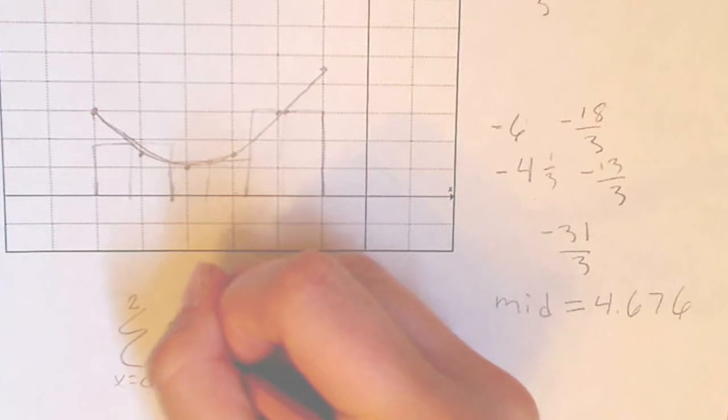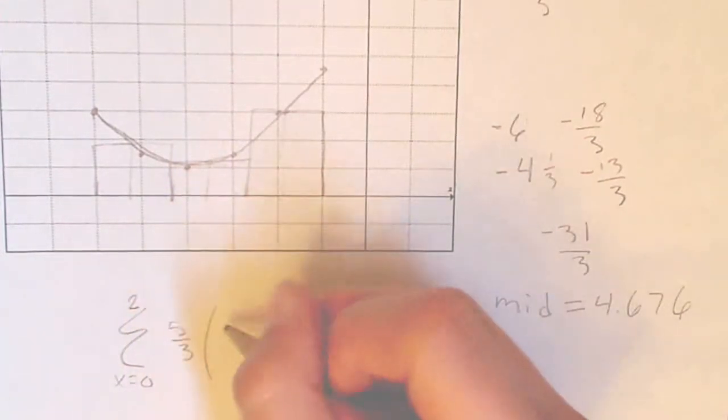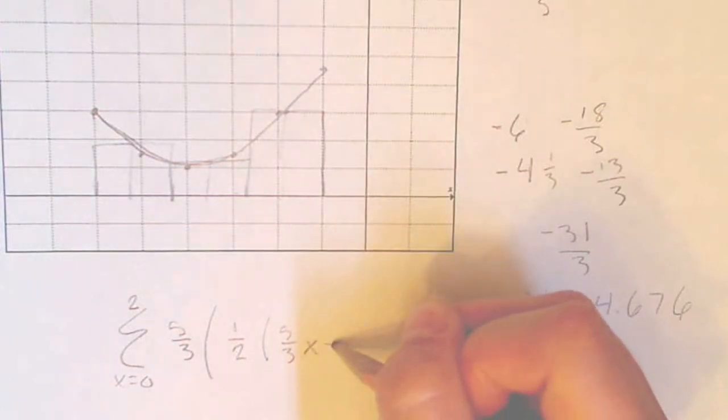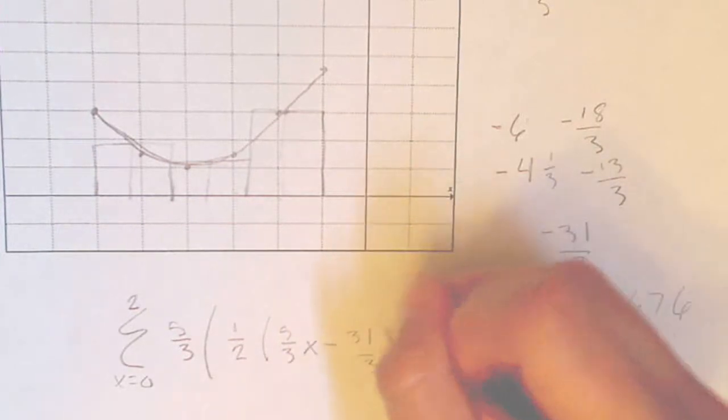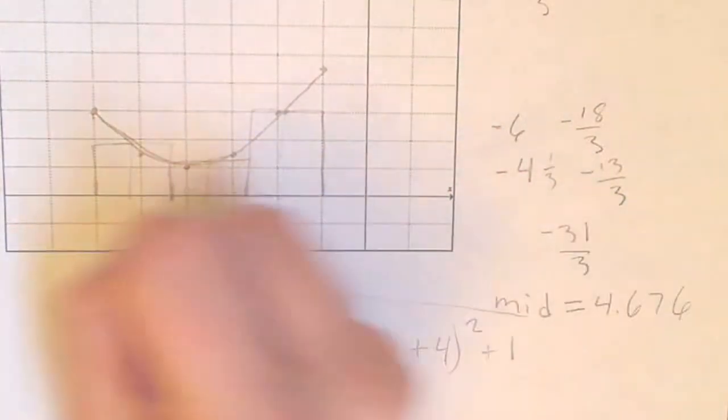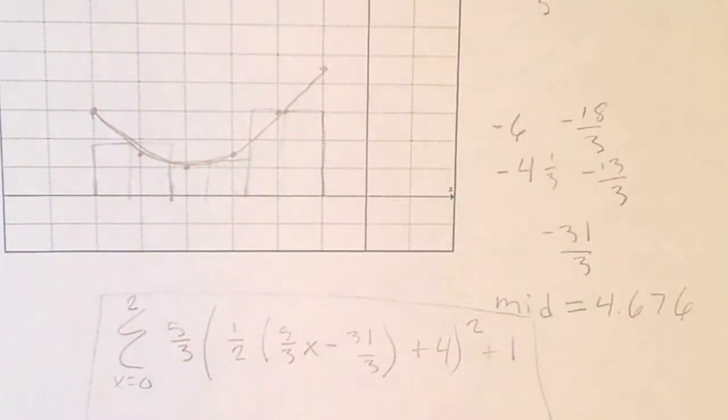You put the 5 thirds right here. That 1 half of your 5 thirds x minus whatever your midpoint was, which is 31 over 3, plus 4, that's all squared, plus 1. So this is your summation notation equation right there.